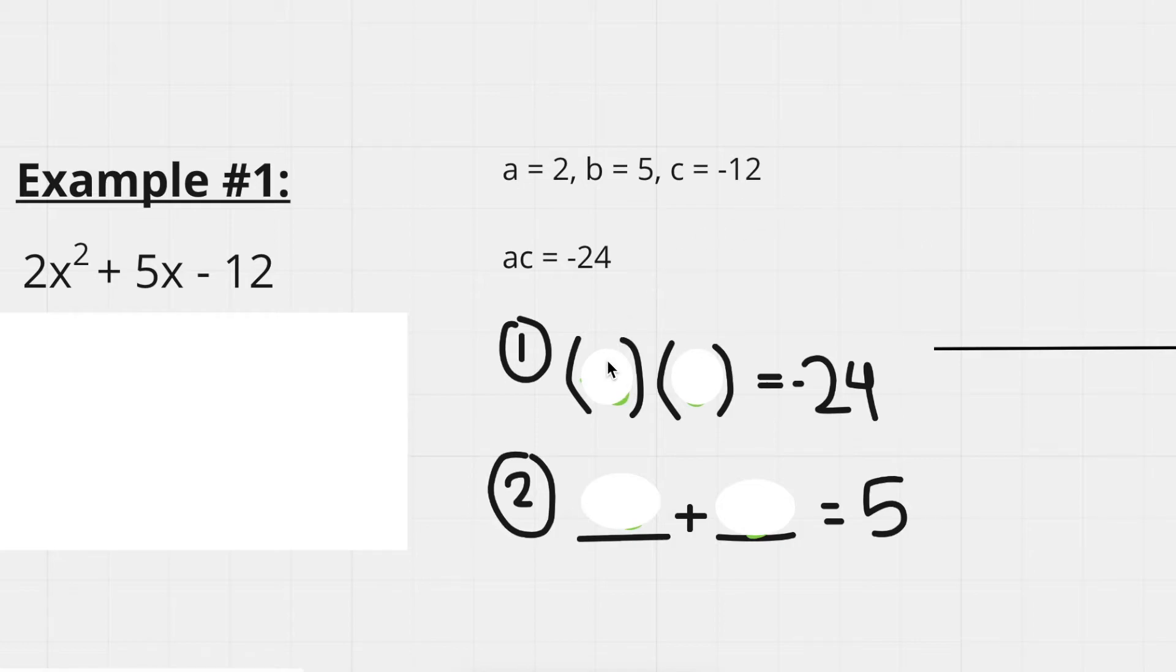Okay, so the two numbers that I found were negative 3 and 8. So negative 3 times 8 gives you negative 24, and negative 3 plus 8 gives you 5. Now, the next step is to break the b term up into these numbers, as shown here.